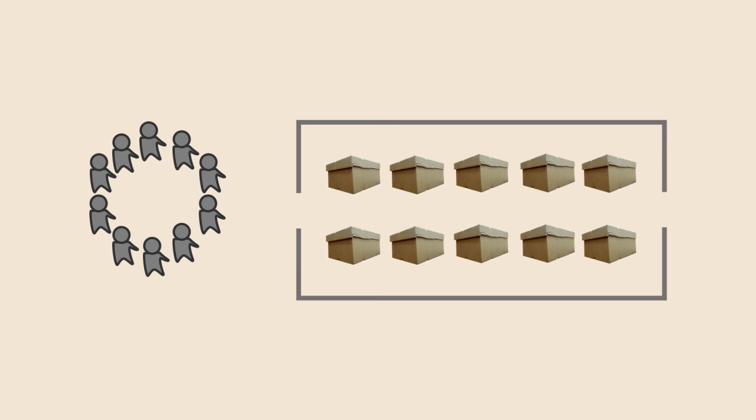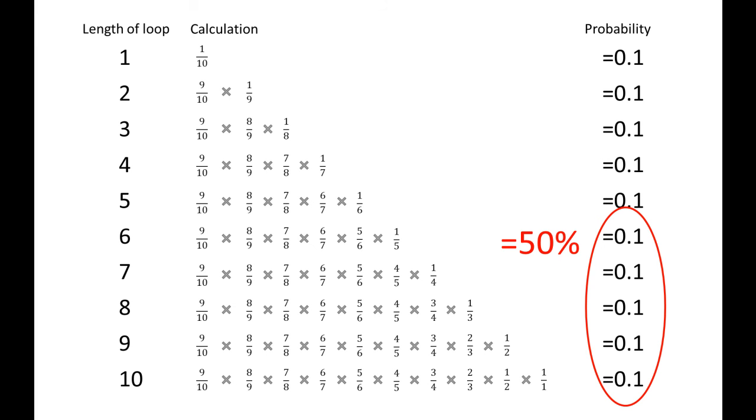But like the Veritasium answer, if there is no loop greater than the number of boxes the prisoner can open, then all of the prisoners will succeed with the loop trick.